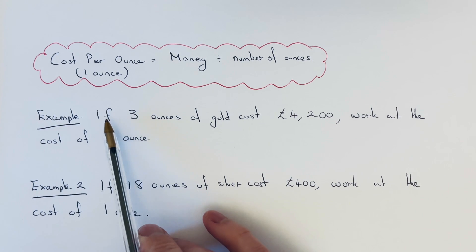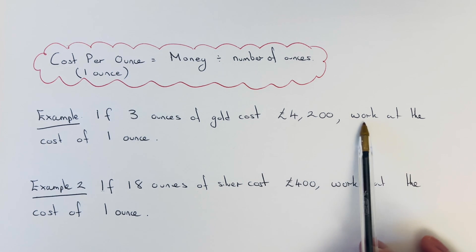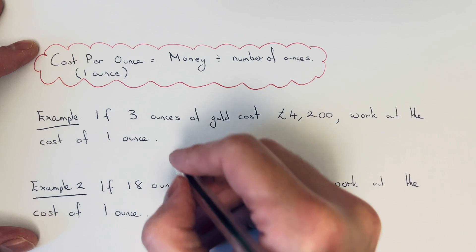Let's have a look at two examples. Example 1: If 3 ounces of gold cost £4,200, work out the cost of 1 ounce of gold. So all you do then is get your money, which is £4,200.